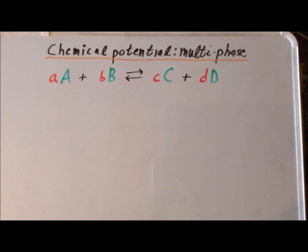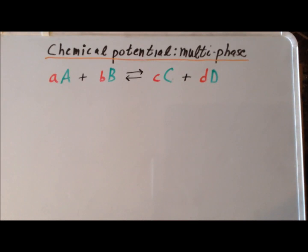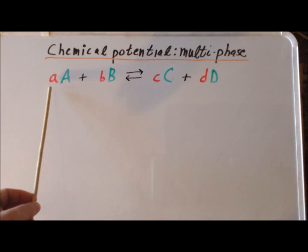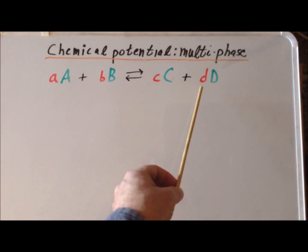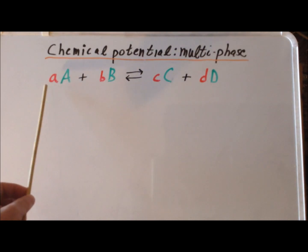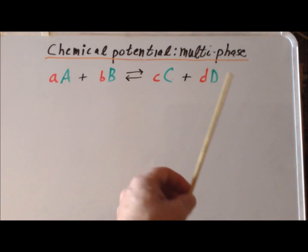Here we have written a generic multiphase chemical reaction that involves Big A and Big B as reactants and Big C and Big D as products. We can recognize the chemical species written in capital Latin letters, and the number of moles of each that are reacting are written in small Latin letters. So we have small a, b, c, and d as the coefficients — integers representing the number of moles of reactants Big A, Big B, or products Big C or Big D.